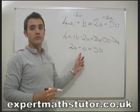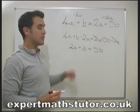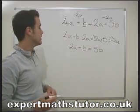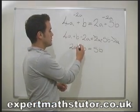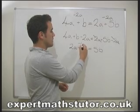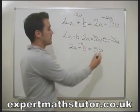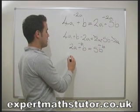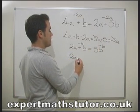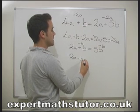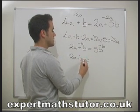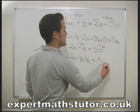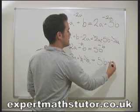Now the problem is we've still got a b on this side, so we need to get rid of the b from this side. We need to take away b from this side of the equation, and we need to do that to both sides. So we end up with 2a plus b take away b — those cancel out — equals 5b take away b.